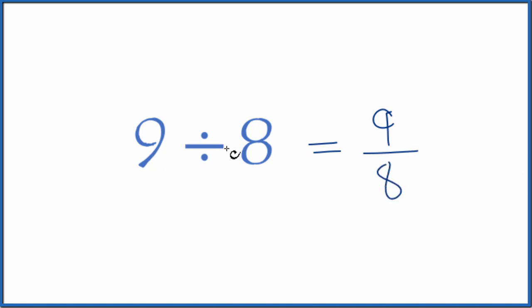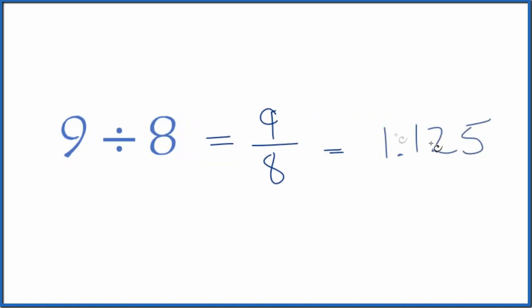You could also divide 9 by 8 on a calculator. 9 divided by 8 gives you 1.125. So 9 divided by 8 equals the fraction 9 eighths, or the decimal 1.125.